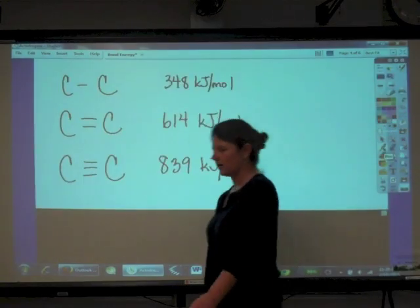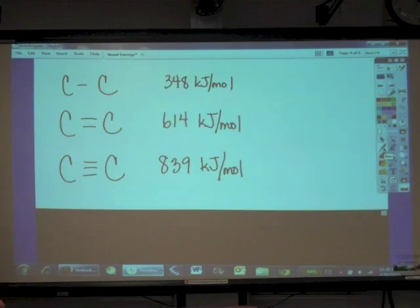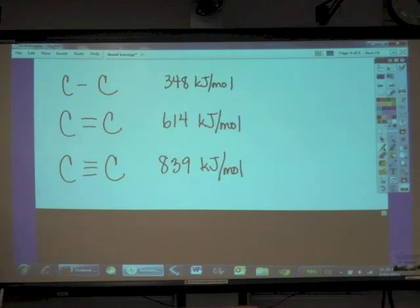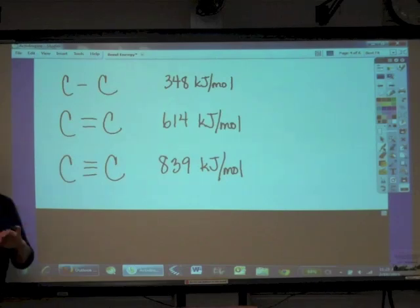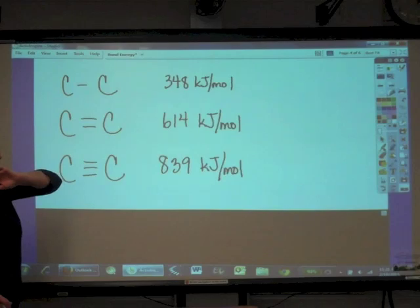Now let's compare some multiple bonds here. So a single carbon carbon bond is 348 kilojoules per mole. A carbon carbon double bond has a bond energy of 614 kilojoules per mole. And a carbon carbon triple bond has a bond energy of 839 kilojoules per mole. So clearly the multiple bonds require more energy to break than a single bond.